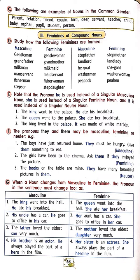When a noun changes from masculine to feminine, the pronoun in the sentence must change too. For example: 'The king went into the hall — he ate his breakfast.' King is male, so we use 'he' and 'his'. If we change king to queen: 'The queen went into the hall — she ate her breakfast.' We cannot mix — we can't say 'the queen went into the hall he ate her breakfast.'